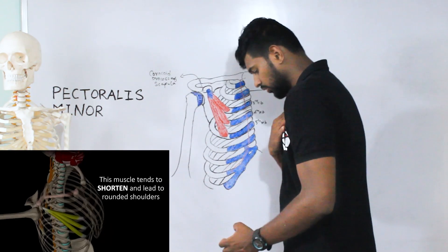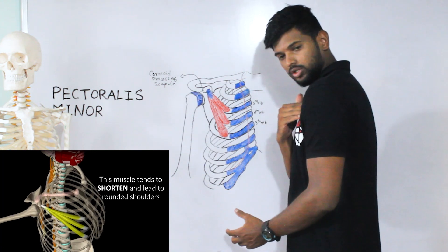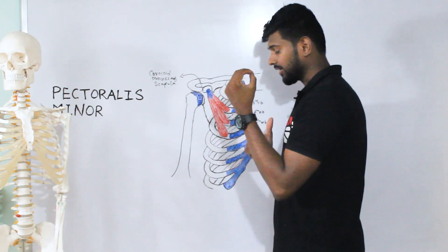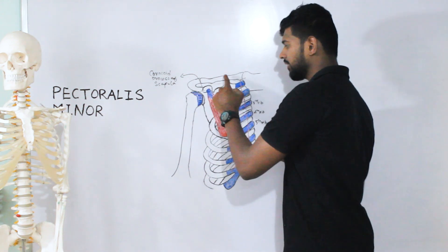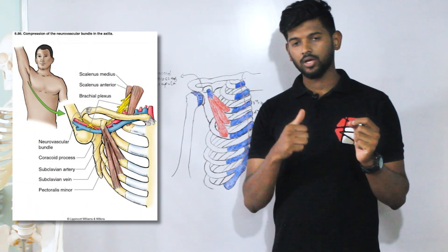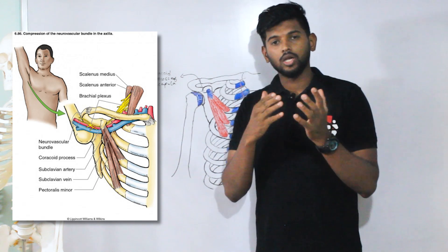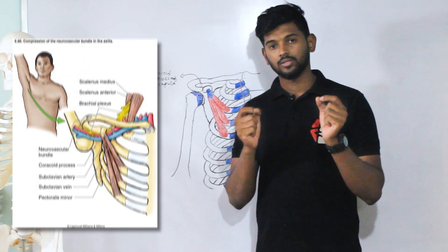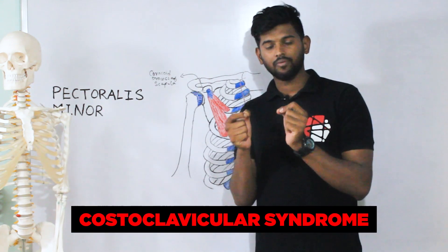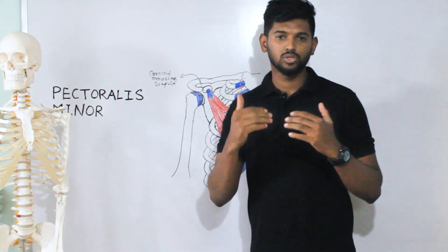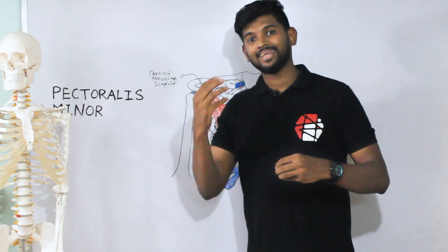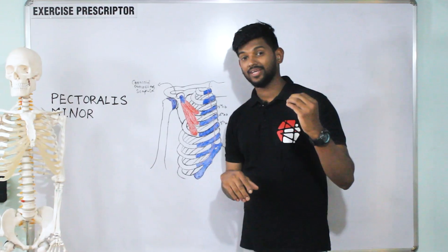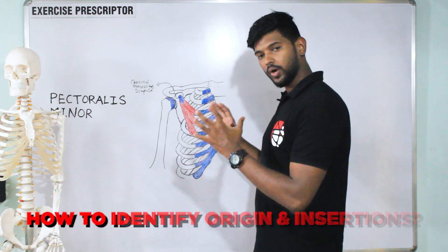The second problem is that tightness of the pectoralis minor causes rounded shoulders. Rounded shoulders lead to dropping of the clavicle, which reduces the costoclavicular space and also compresses the brachial plexus, subclavian artery, and vein — this is called costoclavicular syndrome. Both of these are types of thoracic outlet syndrome.